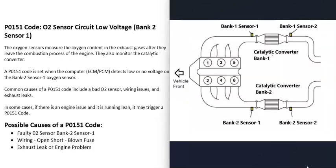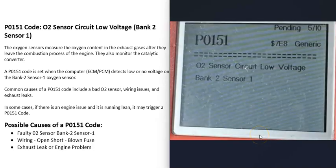There are going to be two sensors on each bank of the engine — sometimes three, but usually two. Sensor 1 is located before the catalytic converter and is also called the upstream O2 sensor. Sensor 2 is located after the catalytic converter and is called the downstream O2 sensor. The P0151 code means the computer sees a problem with the bank 2 sensor 1 O2 sensor.